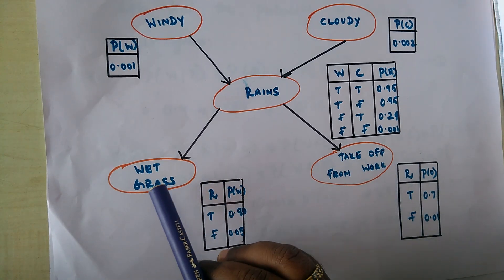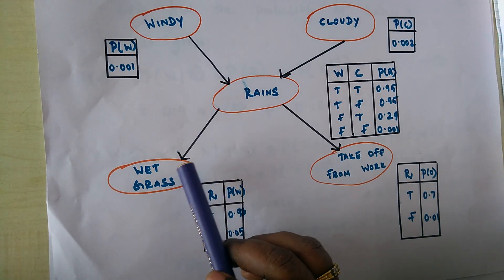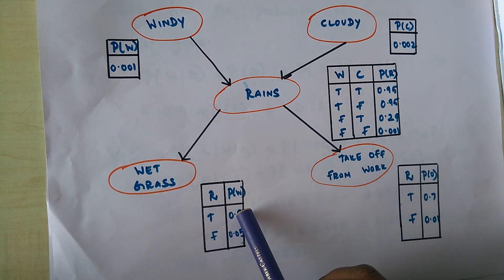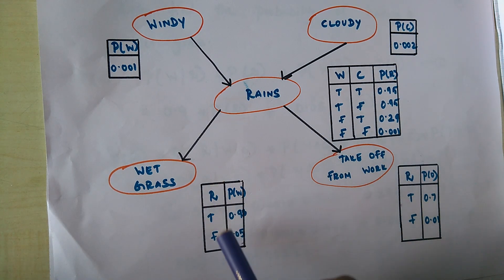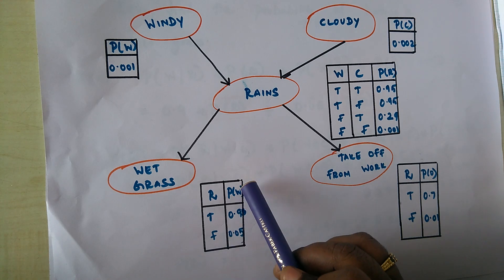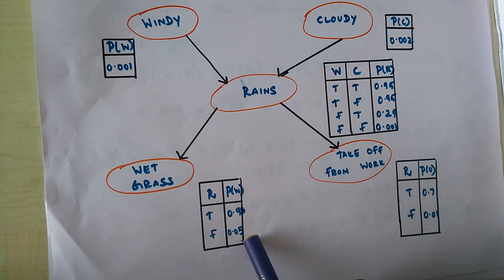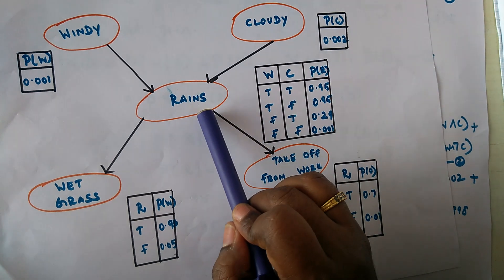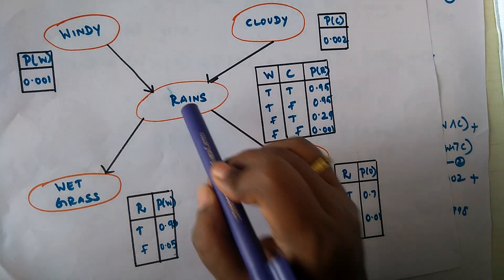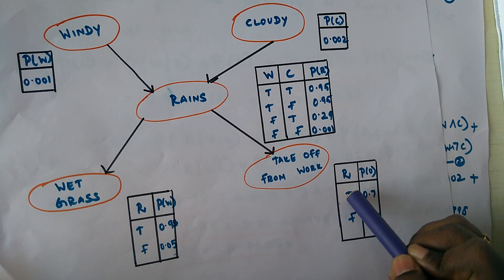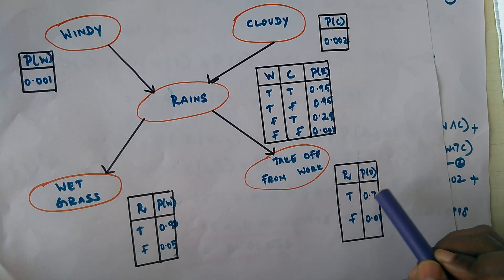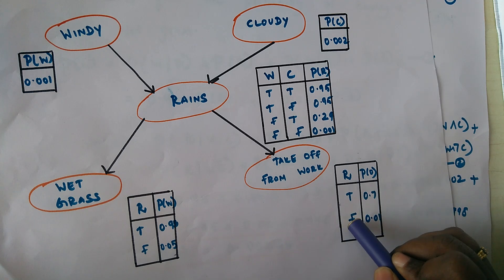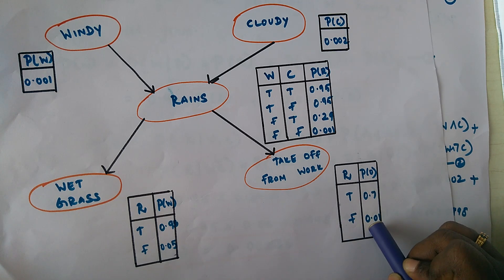Similarly for wet grass: the probability of the grass being wet is dependent on rain. When rain is true, the probability of wet grass is 0.95, and when rain is false, it is 0.05. The probability of taking an off from workers is also dependent on rain and has only one parent. When rain is true, the probability of getting an off is 0.91, and when it is false, it is 0.01.